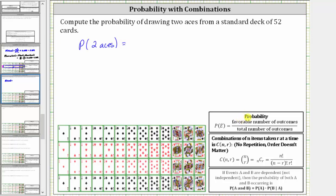One way is to indicate the probability as the probability of two aces. We know the probability of an event is equal to the favorable number of outcomes divided by the total number of outcomes. In our case, the favorable number of outcomes is equal to the number of ways we can select two aces from the aces in the deck.